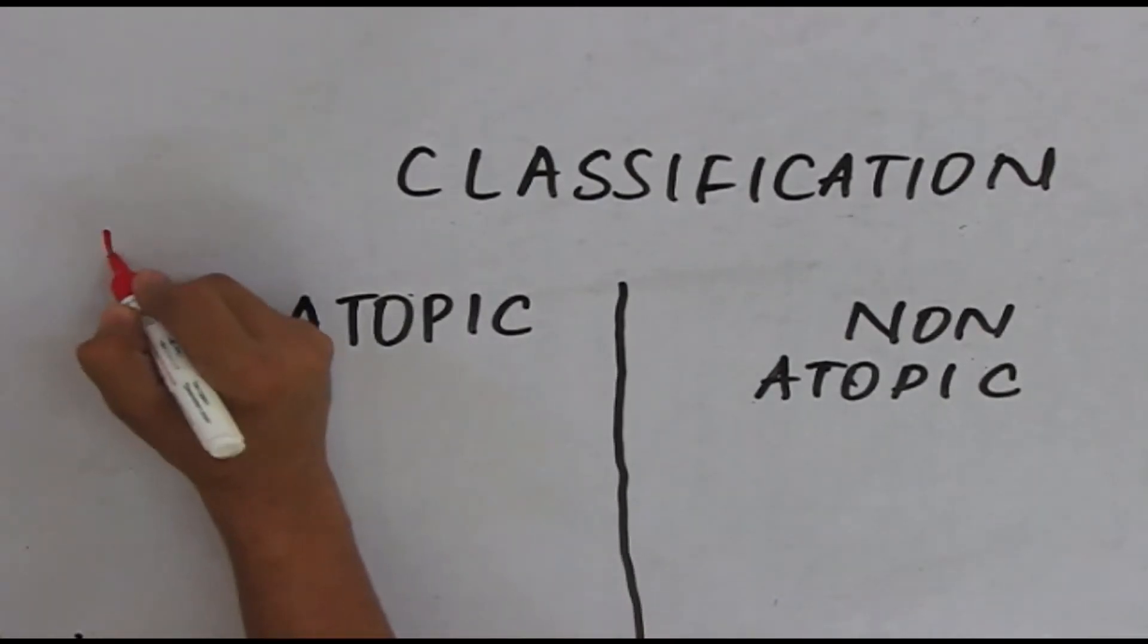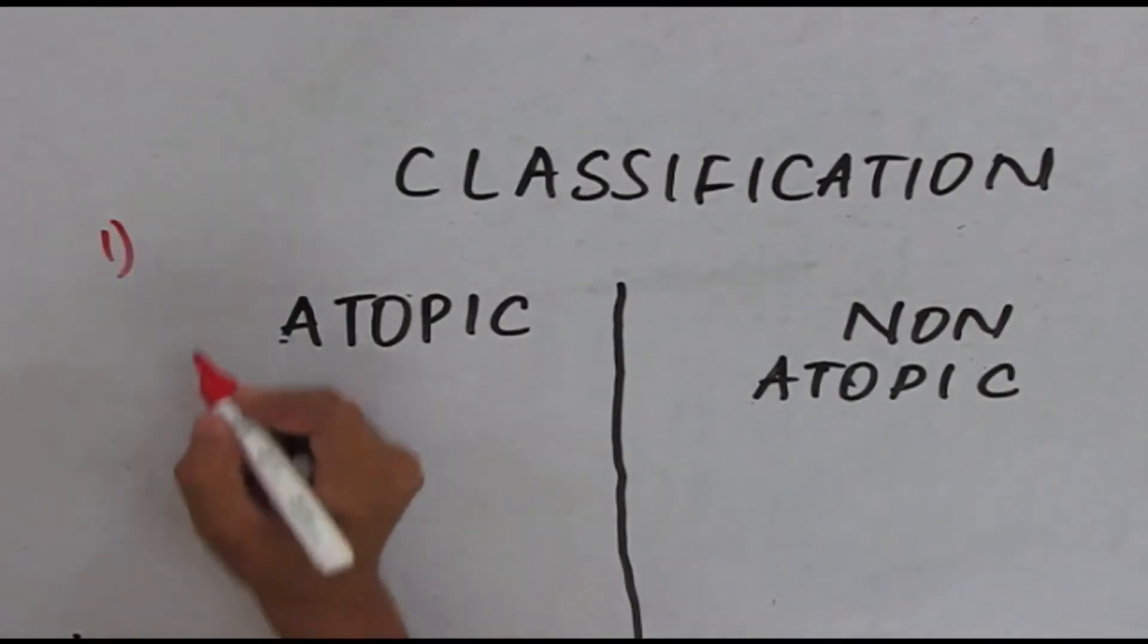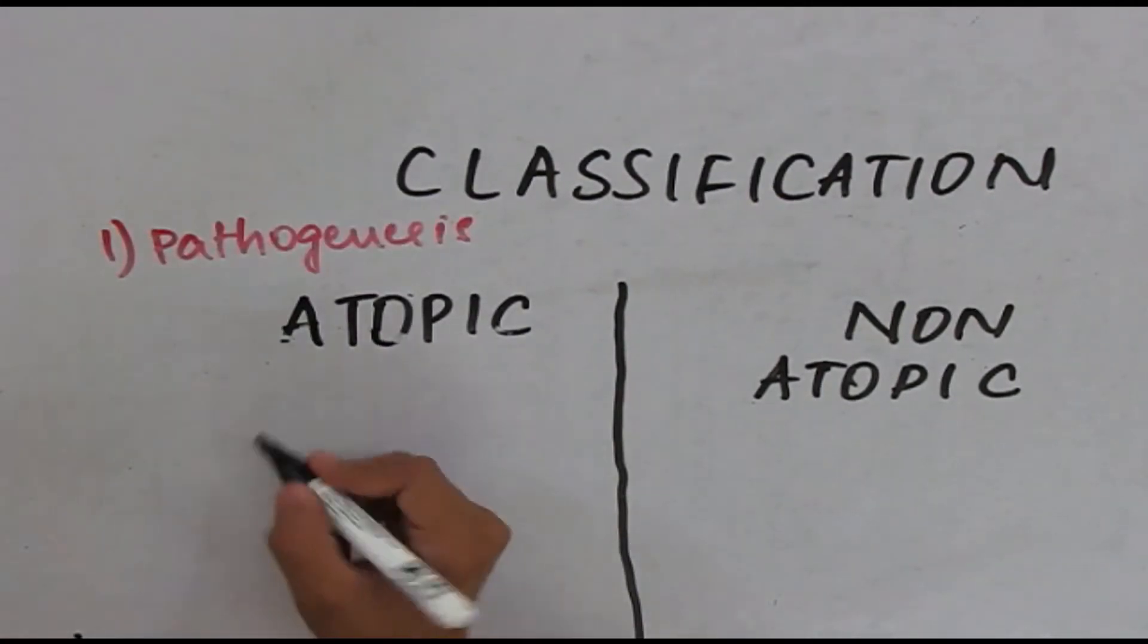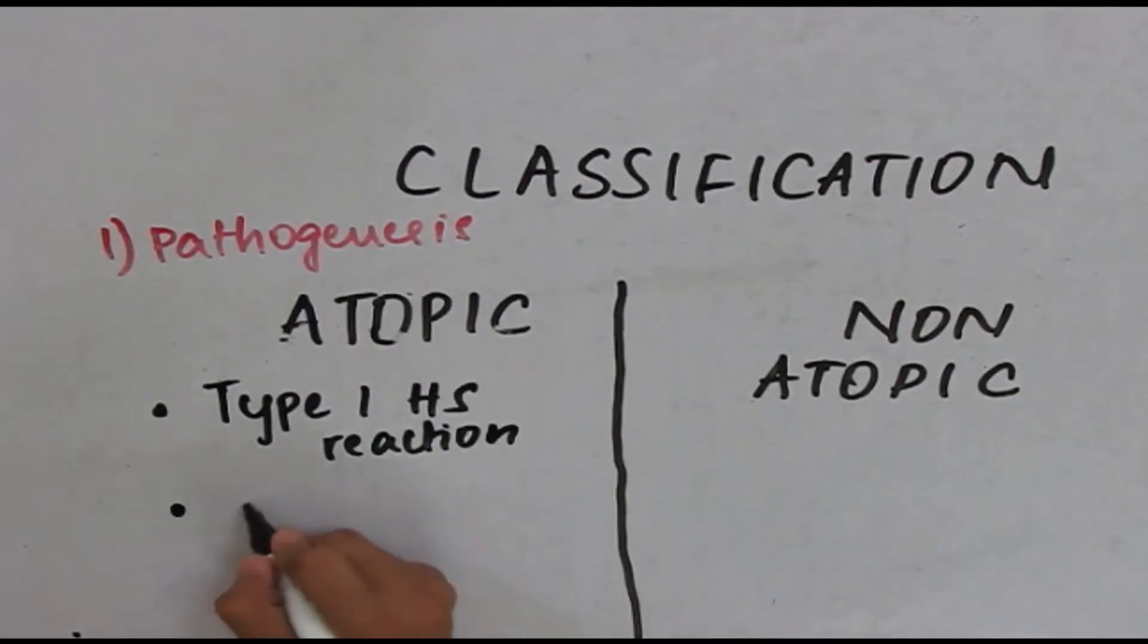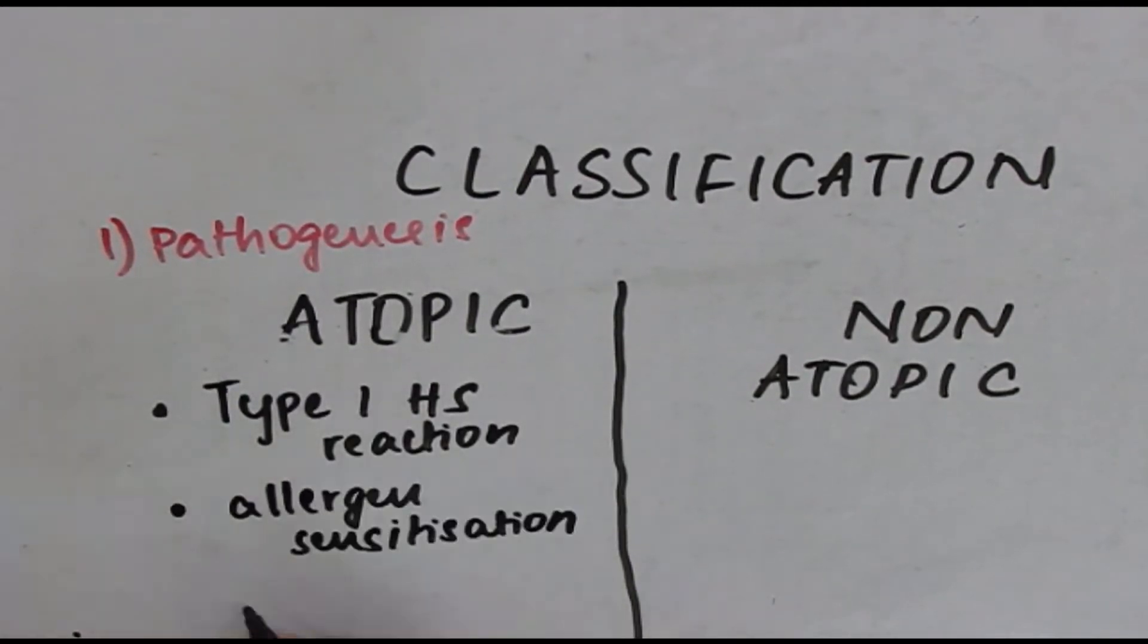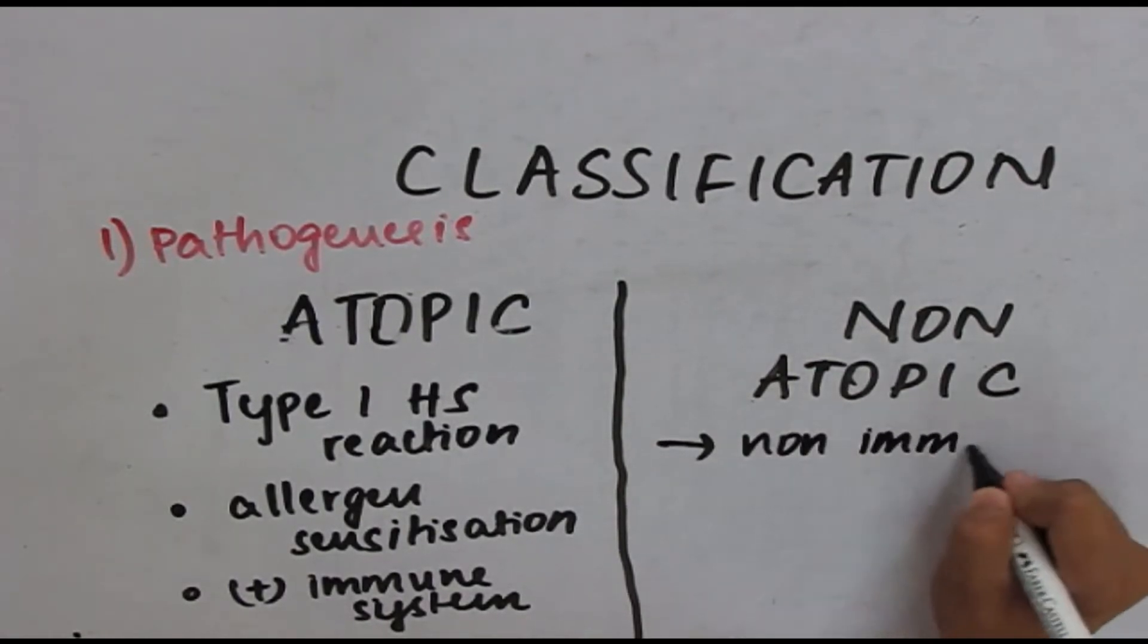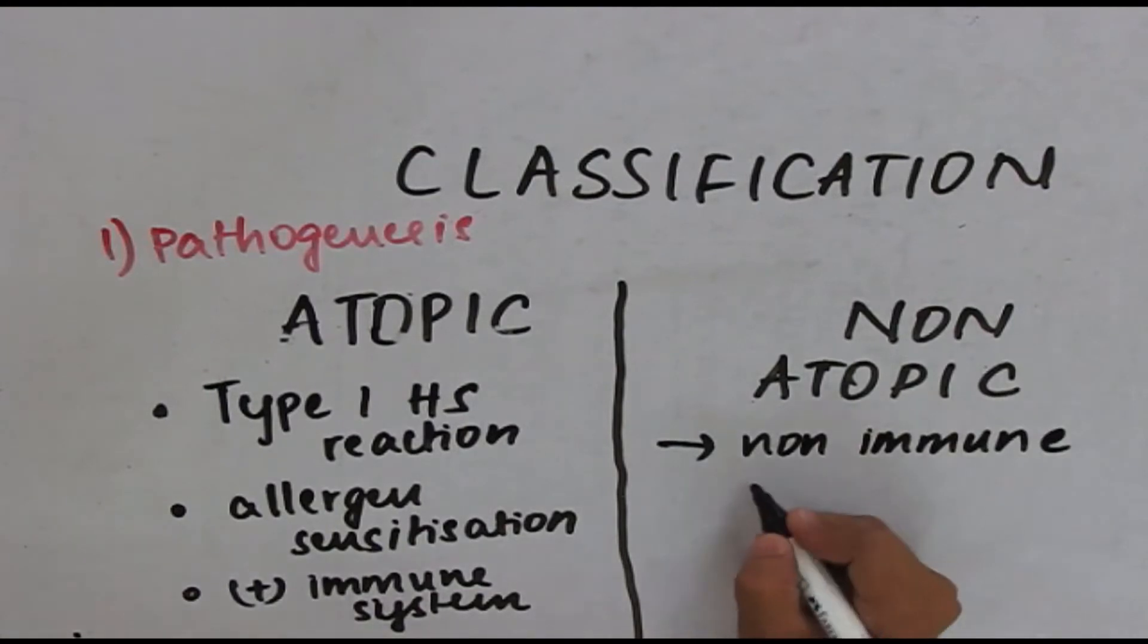The first criteria we are going to distinguish atopic and non-atopic is under pathogenesis. In atopic, the pathogenesis is due to type 1 hypersensitivity reaction in which there is allergen sensitization and activation of immune system. But in non-atopic type, the mechanism is non-immune, that is, immune system is not involved.